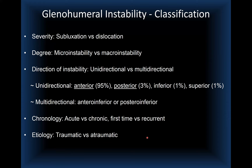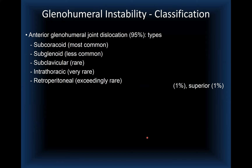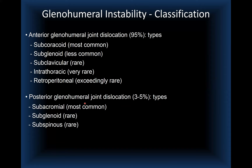For anterior glenohumeral dislocation, which accounts for 95% of cases, the most common subtype is the subcoracoid variant, followed by subglenoid, subclavicular, intrathoracic, and even retroperitoneal variants, which are very rare. For posterior glenohumeral dislocation, the subacromial type is most common, while the subglenoid and spinous types are rare.